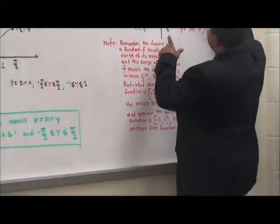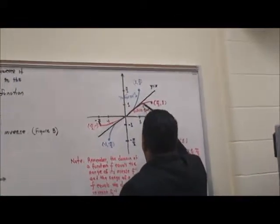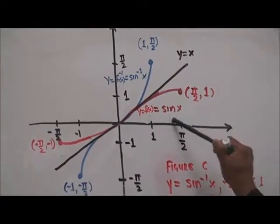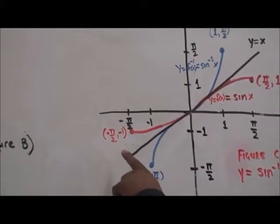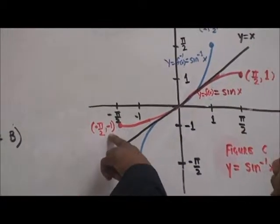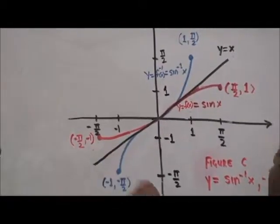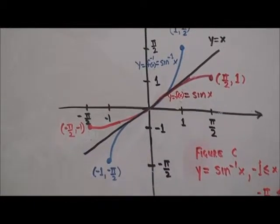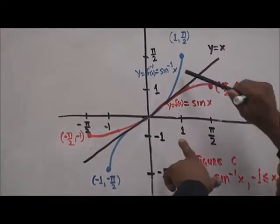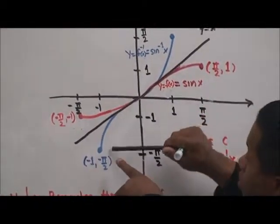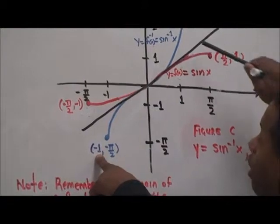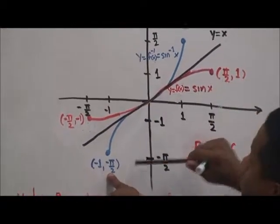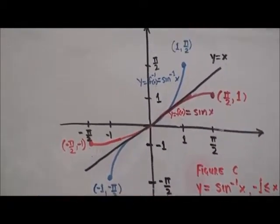Look very closely at the curve in red — that is y equals f of x equals sine x. Its domain is from negative pi over 2 to pi over 2 and its range is from negative one to one. Now look at f inverse, which equals sine inverse of x, shown in blue. Its domain is from negative one to one — you see the flip-flop, like the reflection — and its range is from negative pi over 2 to pi over 2.